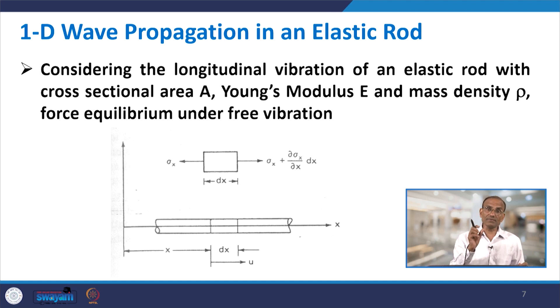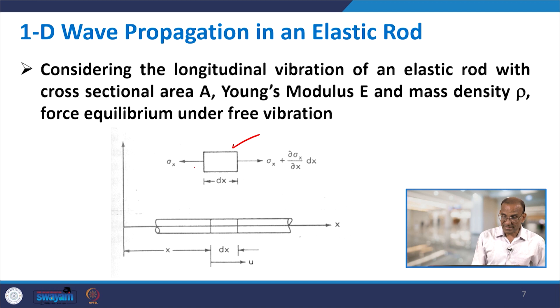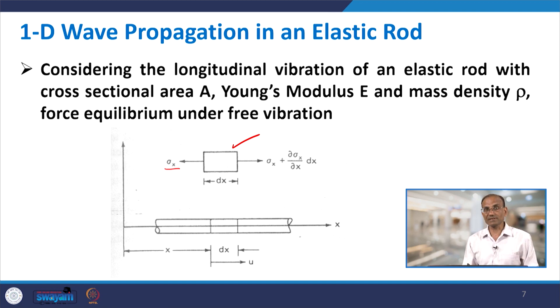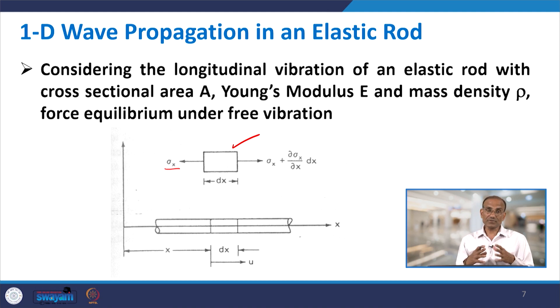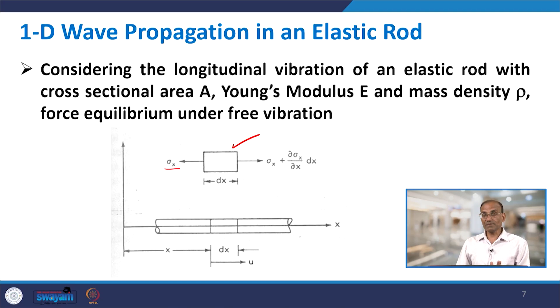Let us continue with the elastic rod and consider longitudinal vibrations for analysis. We consider a small element of the rod, where dx is the length of the element and A is the cross-sectional area. On one side the stress is σx and on the other side it is σx + (∂σx/∂x)·dx. We write the force equilibrium — which is the equation of motion — where forces equal σx times the cross-sectional area on each side.